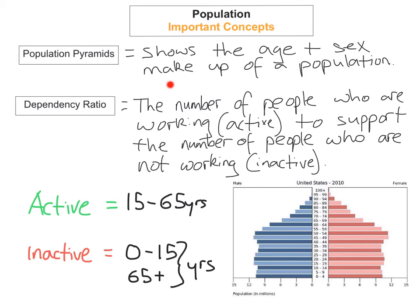Like I said already, the dependency ratio is the number of people who are working, so active, to support the number of people who are not working, inactive. How do you find out who are active? Active is the groups from 15 all the way to 64, 65 there. And inactive is from 0 to 15, and from 65 plus.